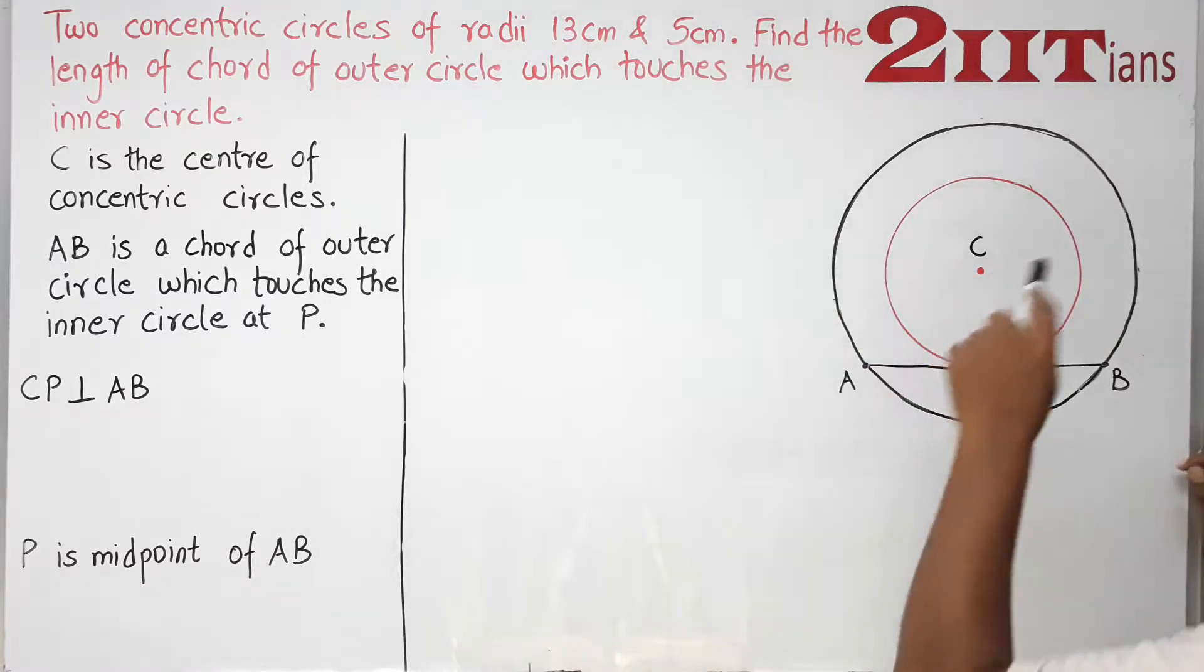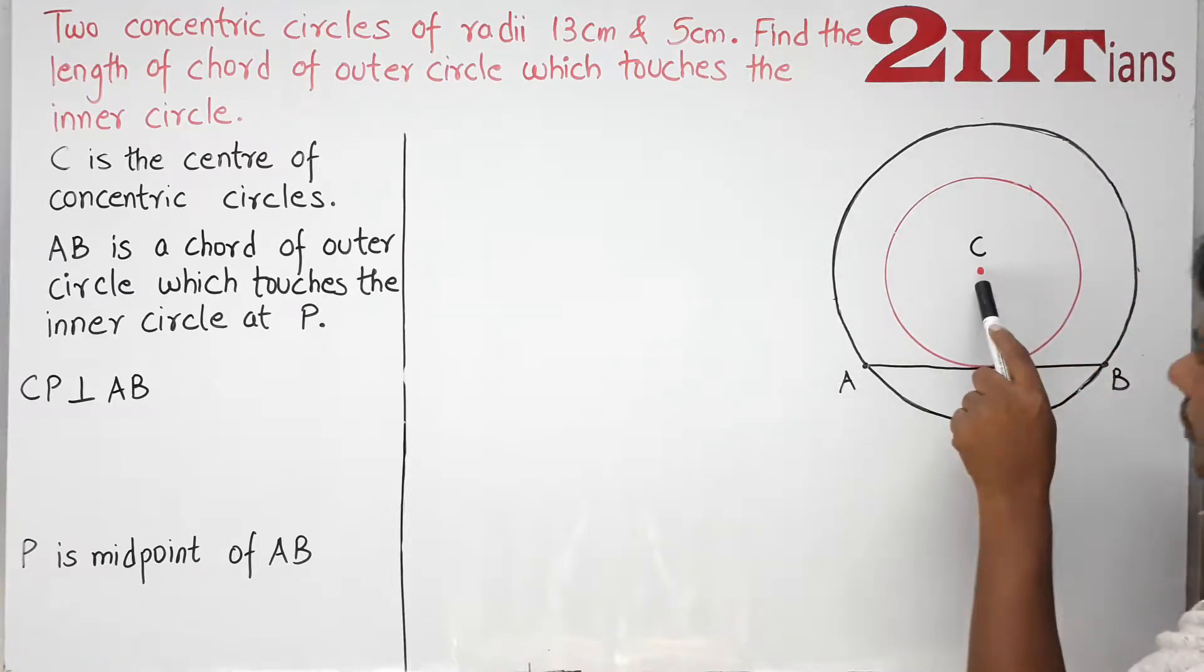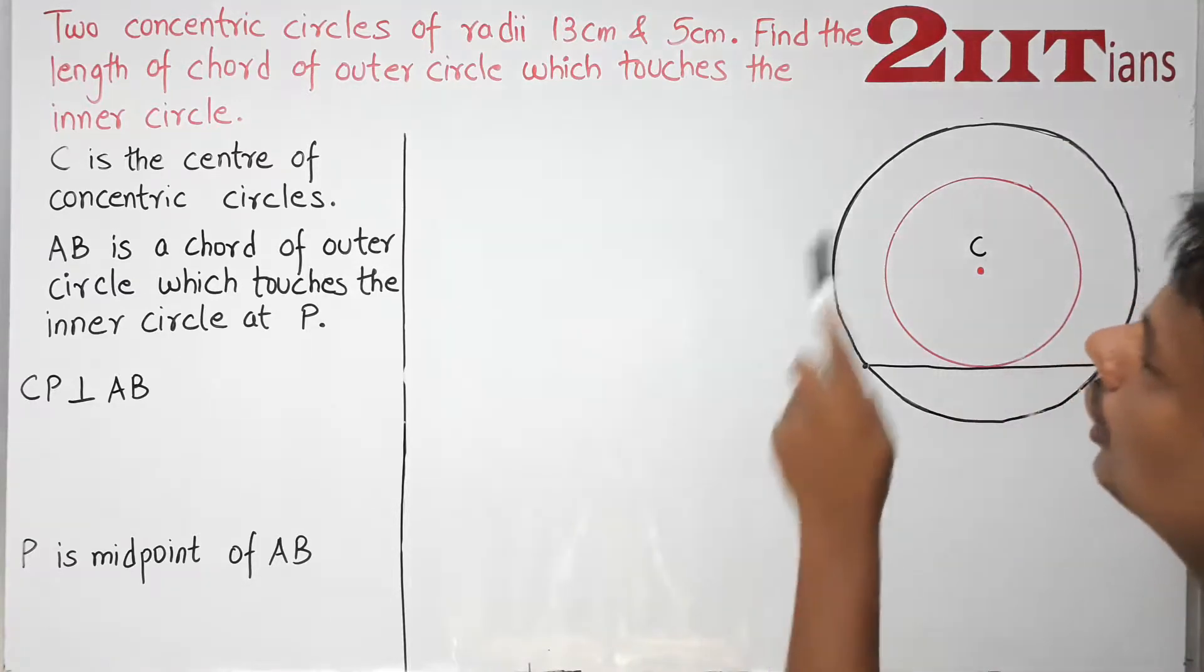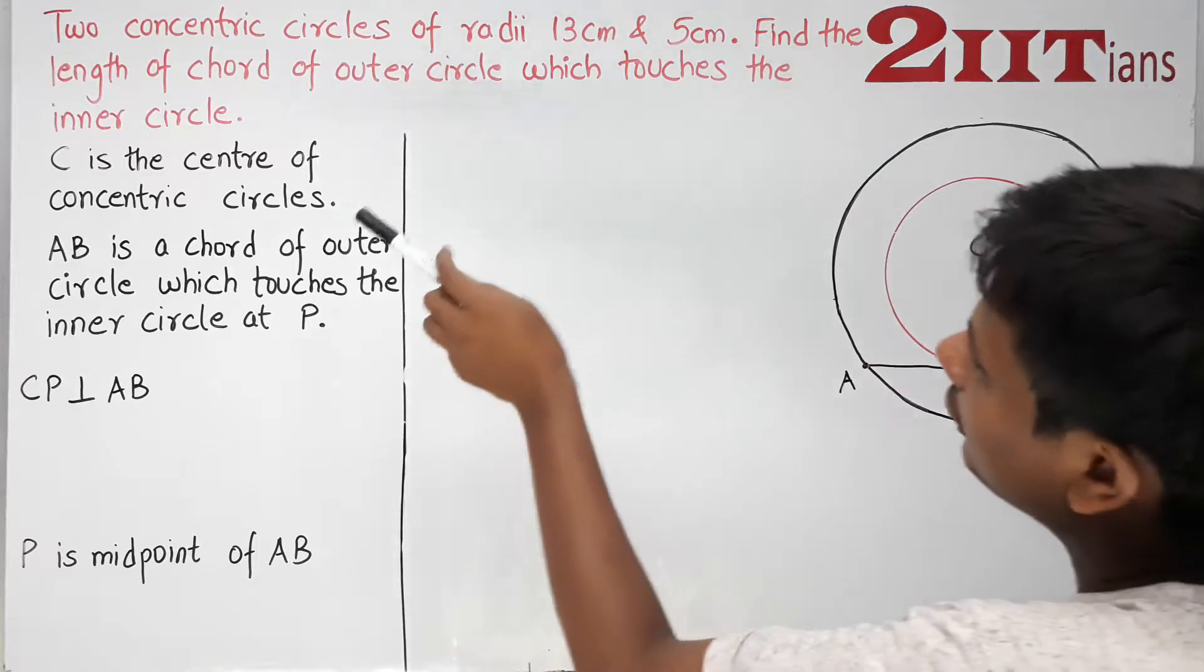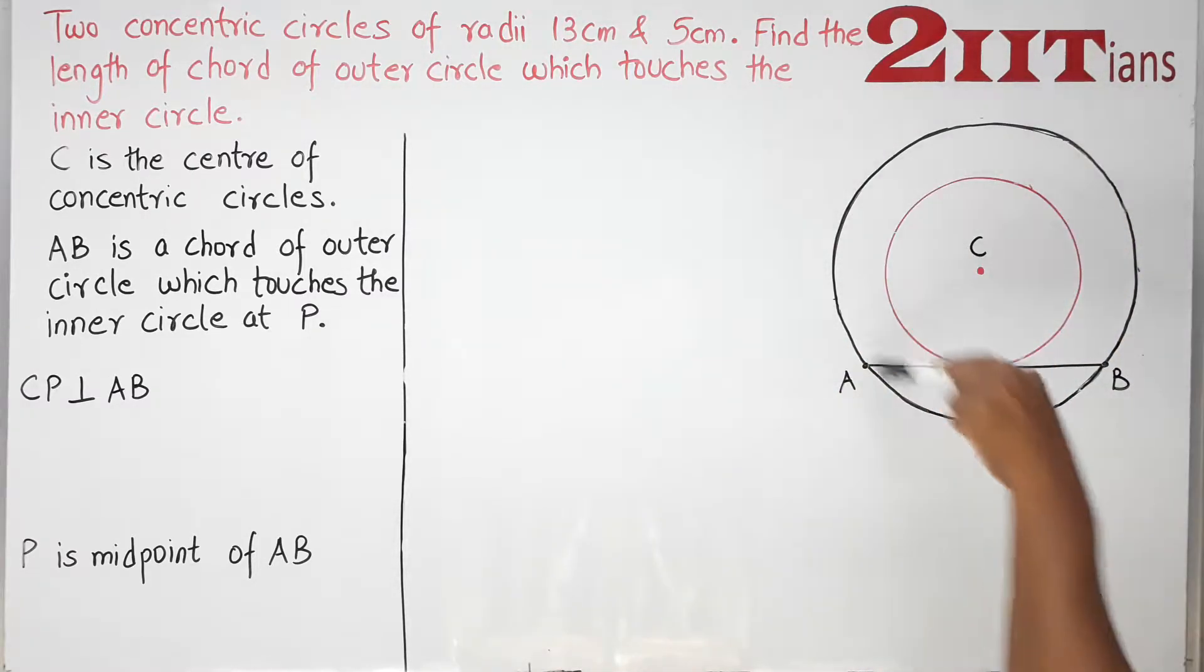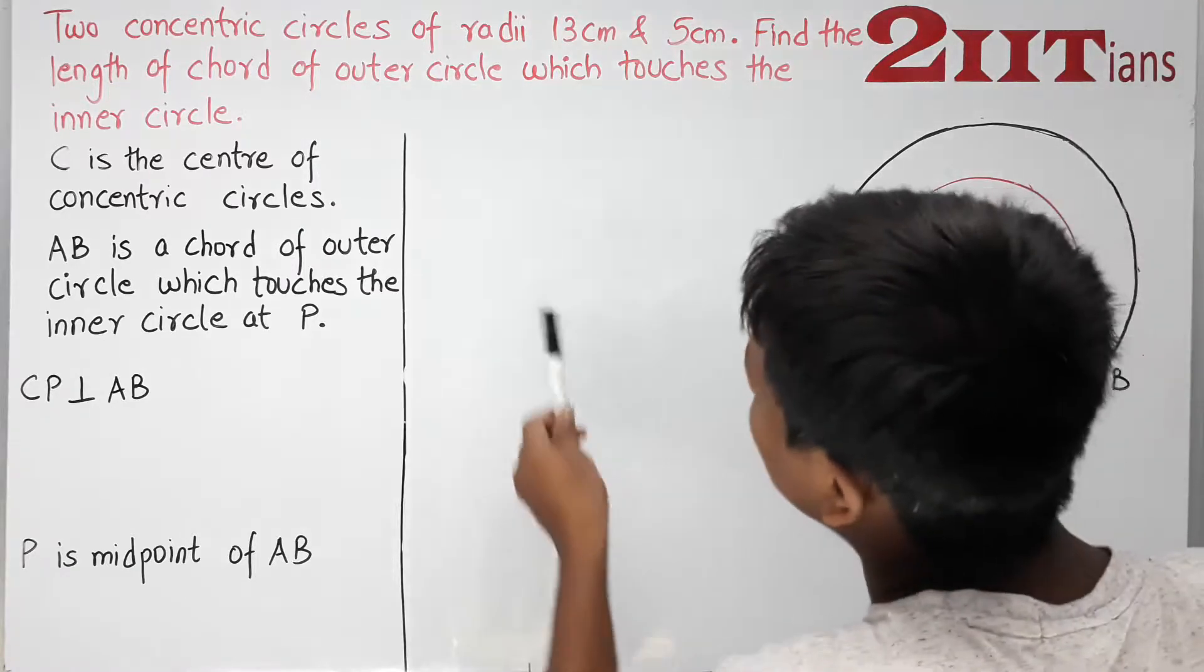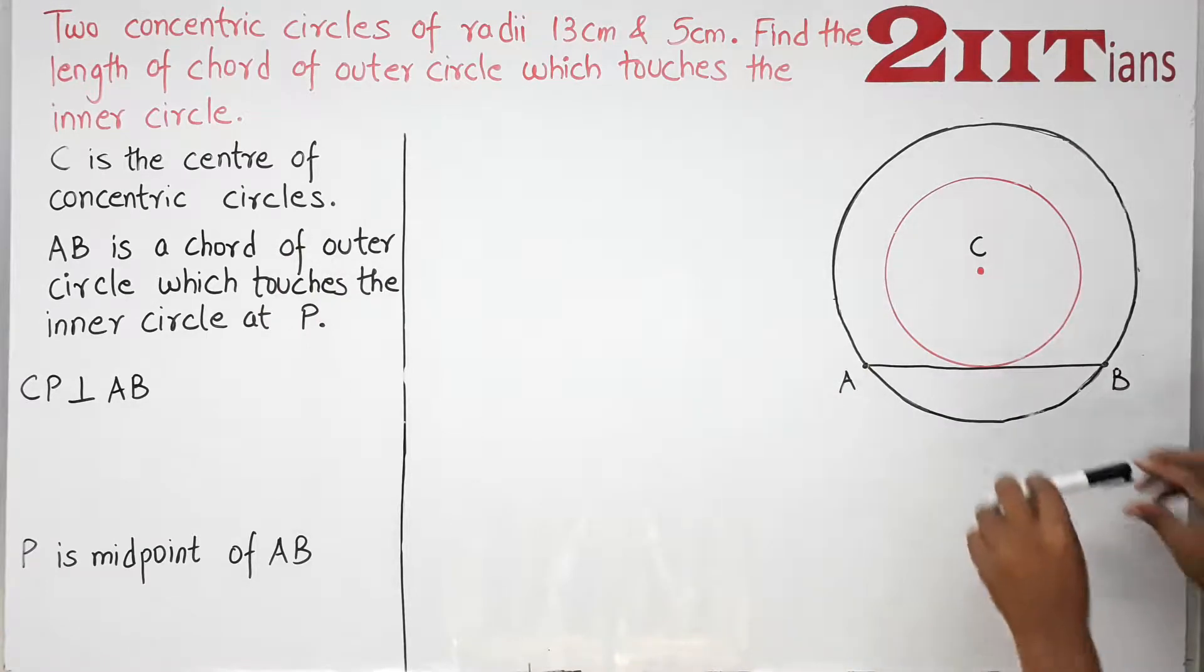Concentric circles have the same center. Find the length of chord of outer circle which touches the inner circle.